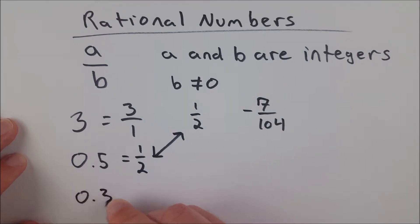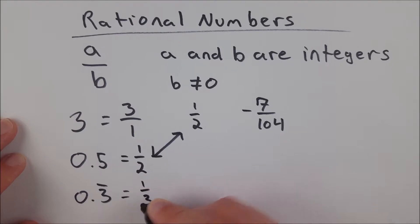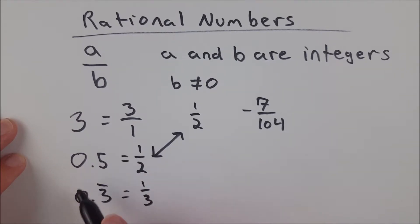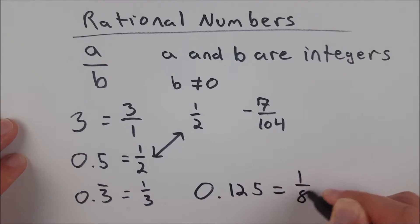0.3 repeating on forever is a rational number because that's equal to 1 third. If we look at the decimal expansions of numbers, like 0.5, 0.3, 0.125, which is equal to 1 eighth, we know that decimal expansions of numbers are rational if they're terminating or if they are repeating.